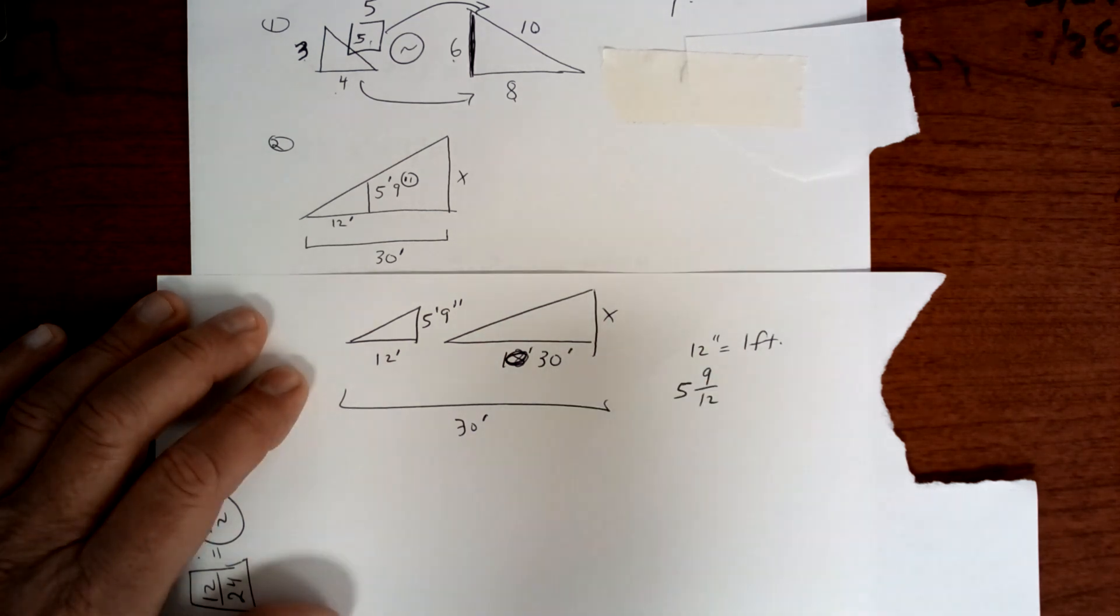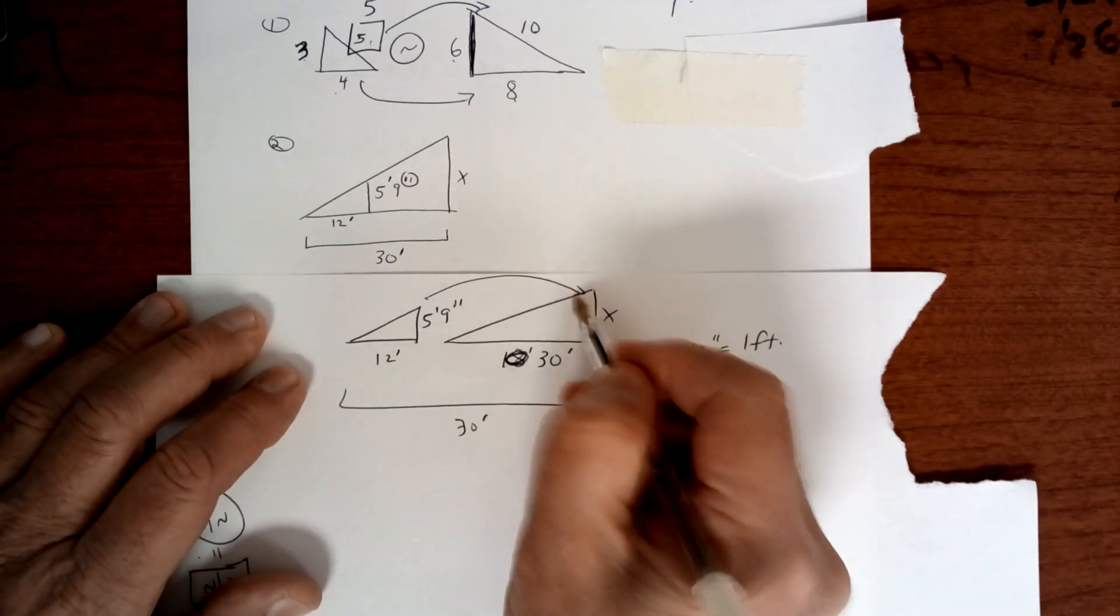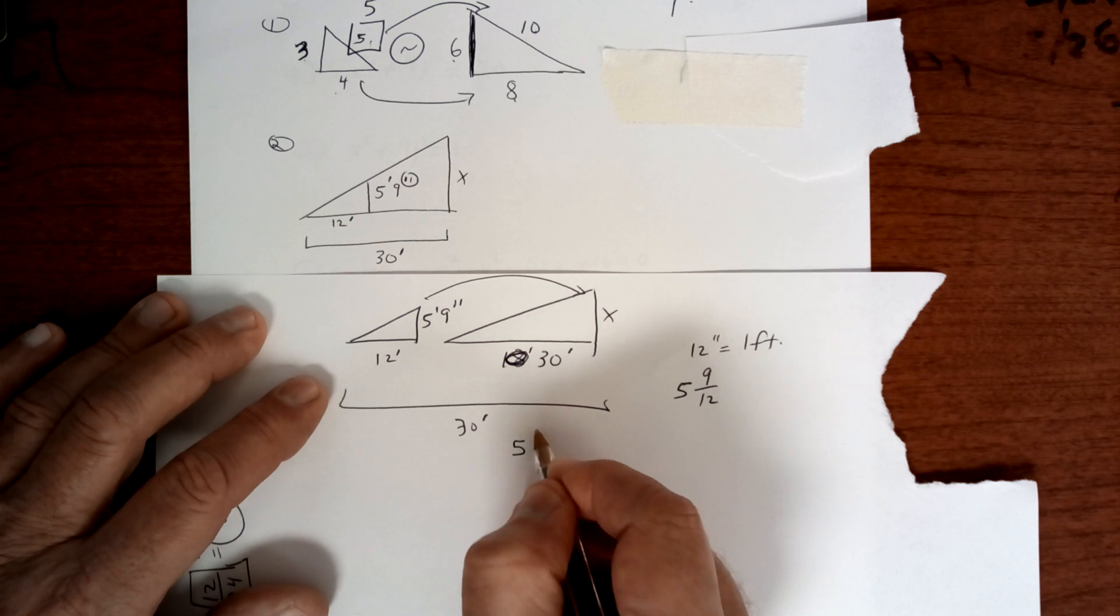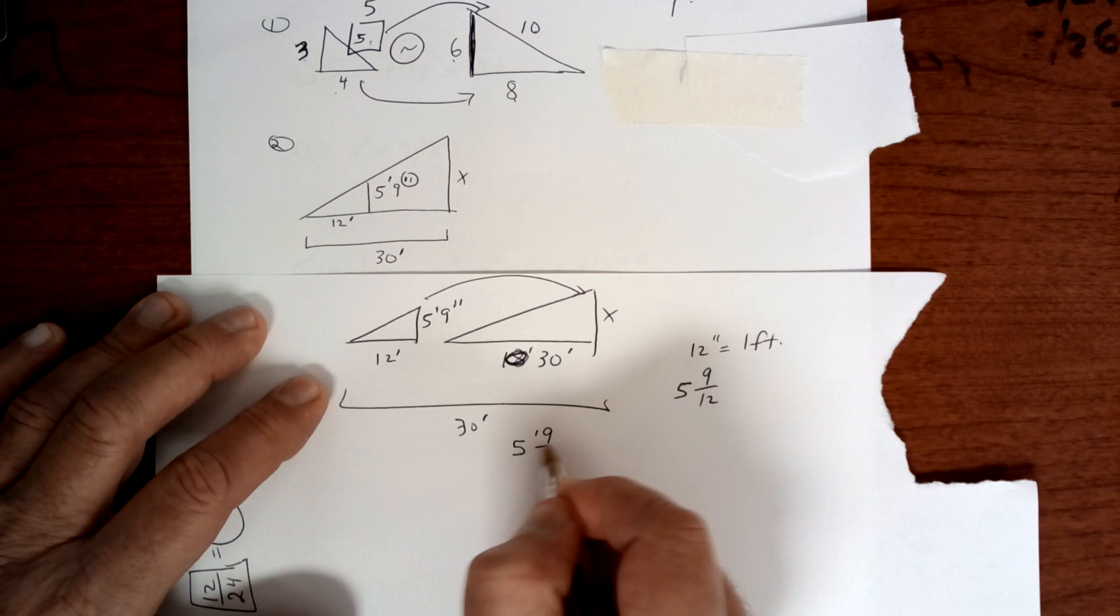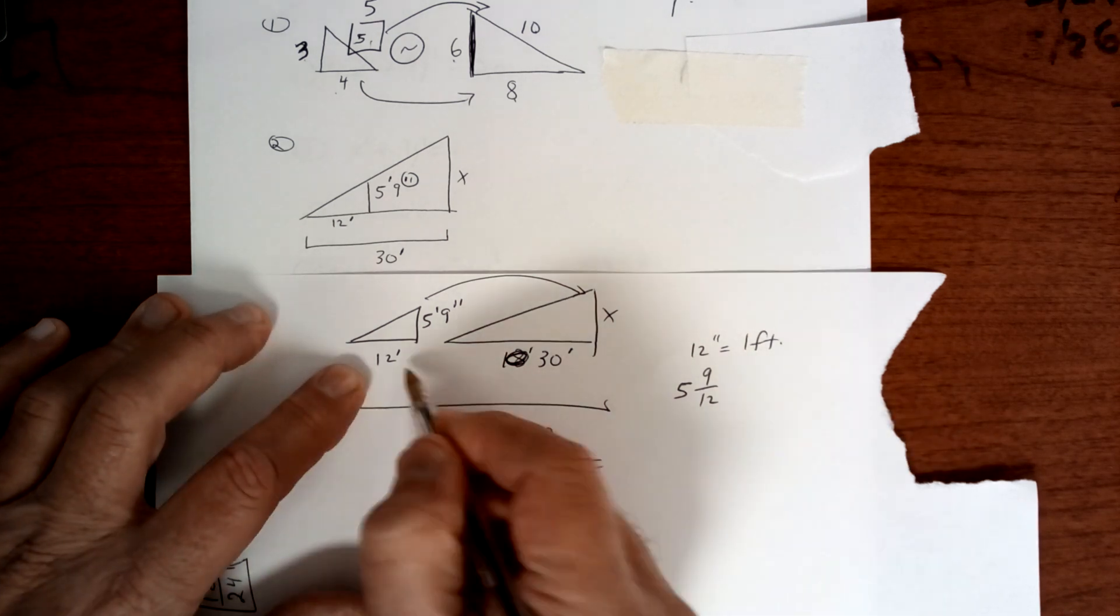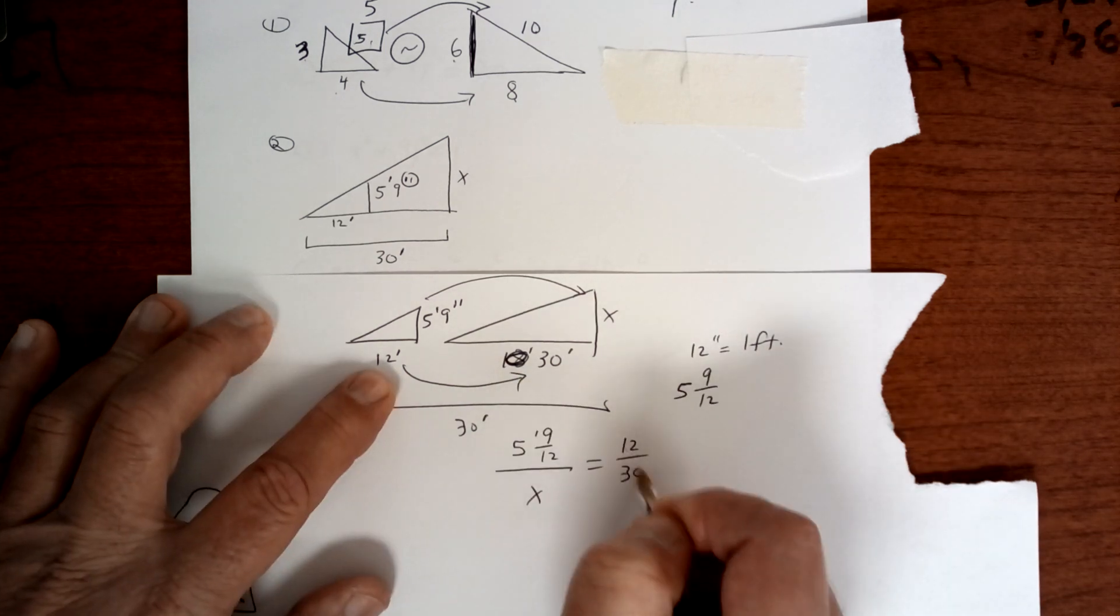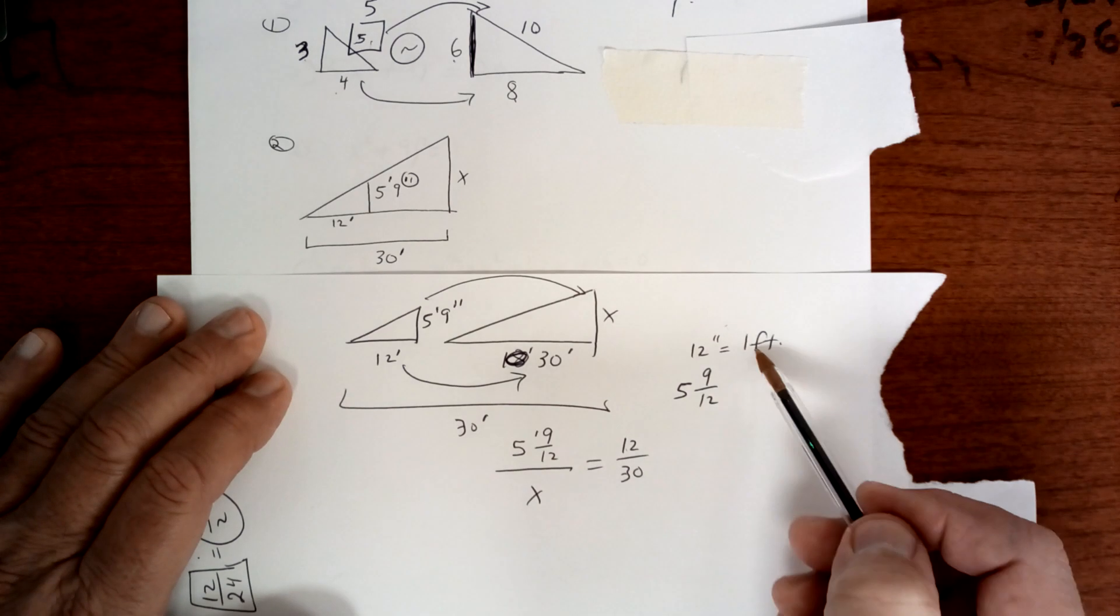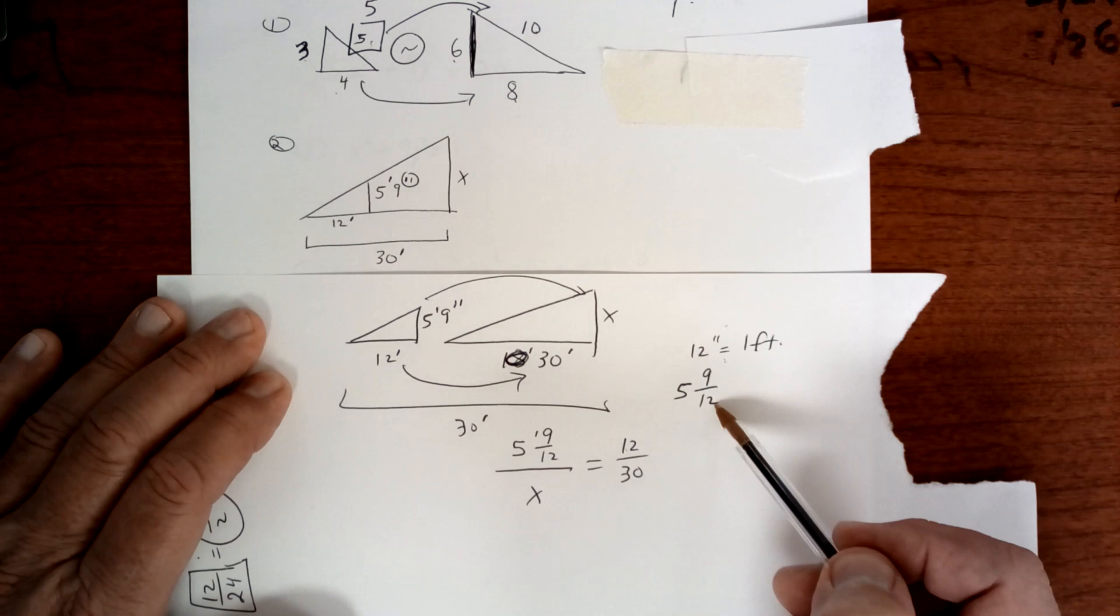So let's set it up. So on this one right here, you've got to do vertical over vertical. So that's going to be 5 feet and 9 inches. So you've got to put 9 out of 12 over x equals keep the same direction 12 over 30. You see, there are 9 inches in a foot. Or rather, 12 inches in a foot. But you have 9 inches. So it's 9 out of 12.